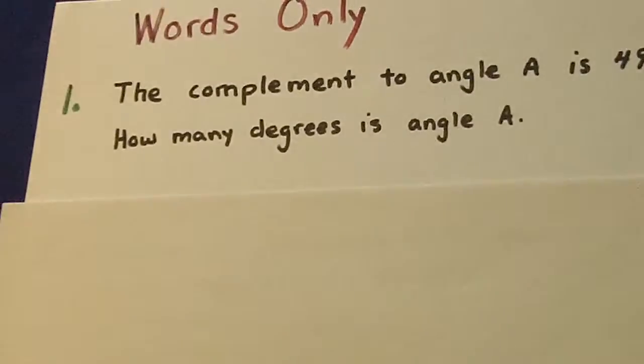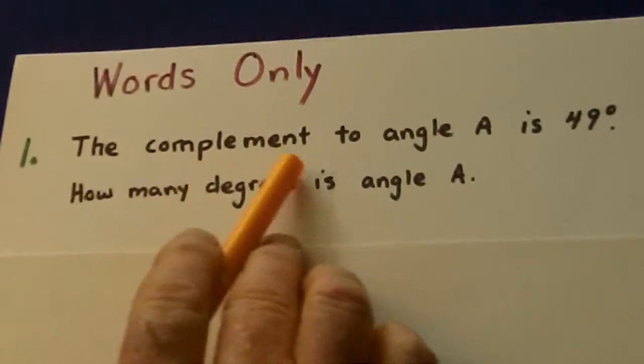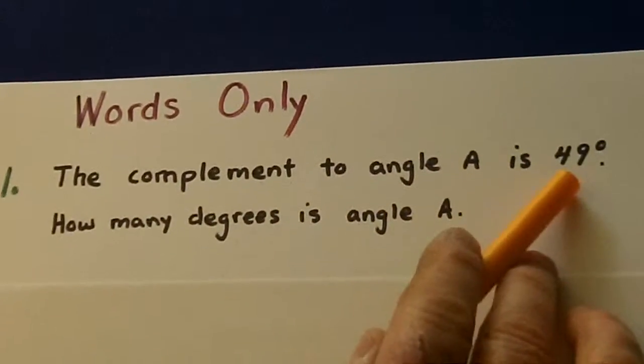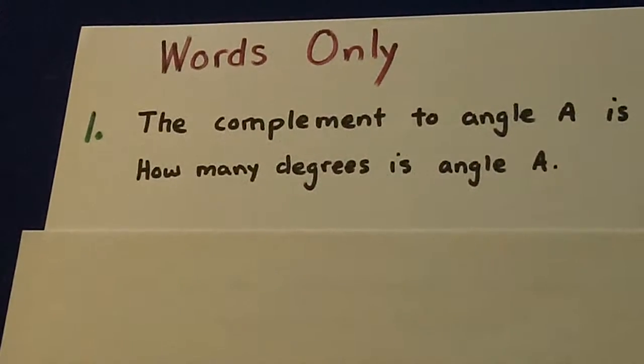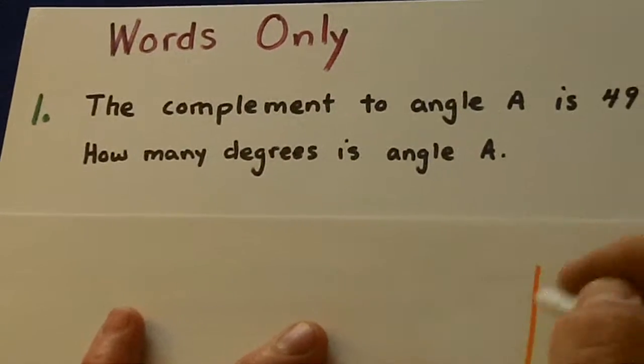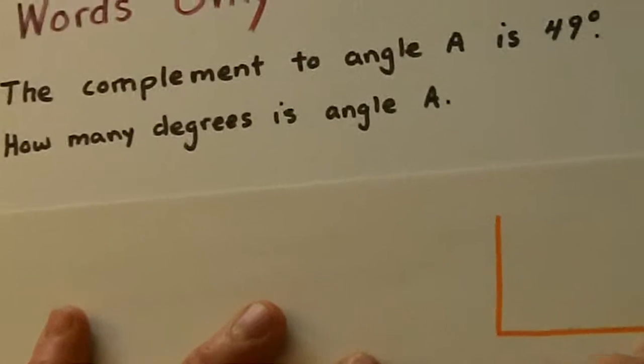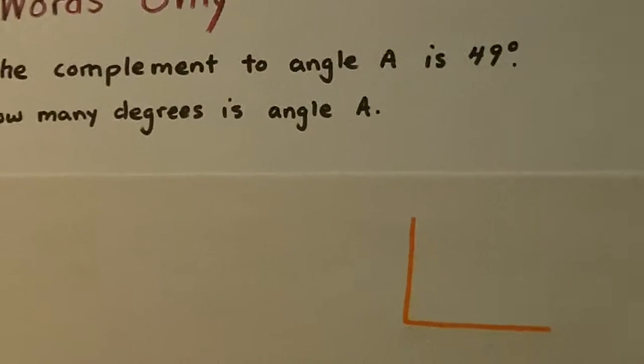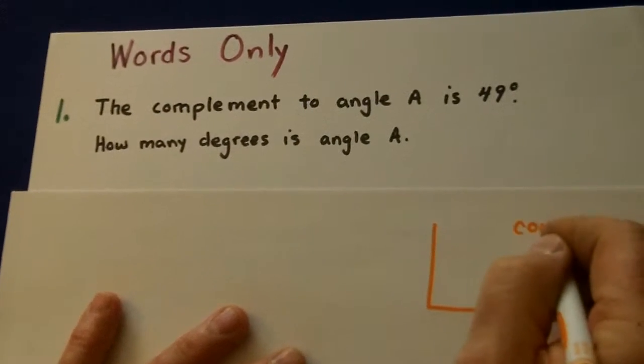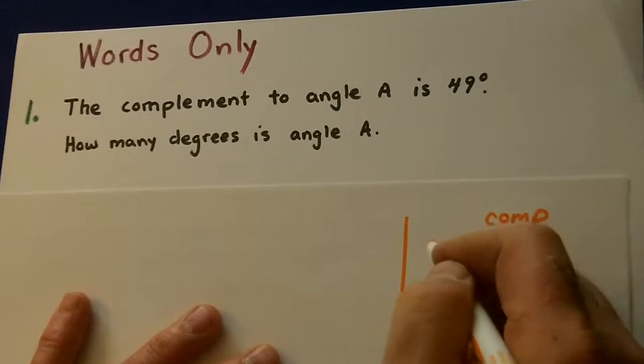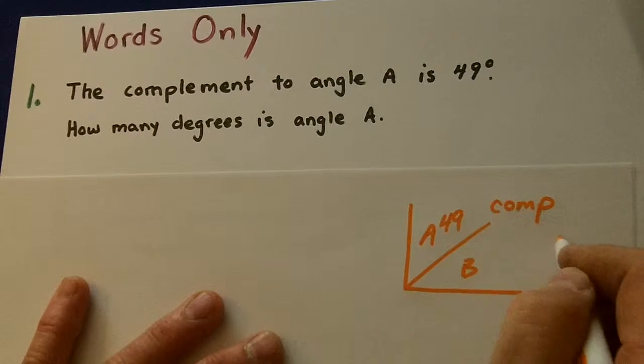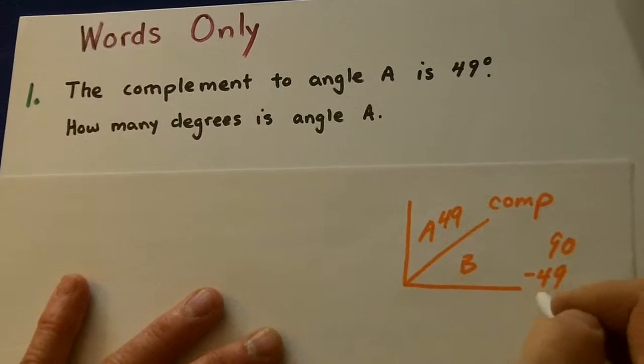So let's look at a words-only problem. Number one: the complement to angle A is 49. How many degrees is angle A? Now you see there's nothing like this, there is no 90 degrees. We have to know that complementary angles are 90. So let's say A is 49, what's B? Well, we just go 90 minus 49 and we get 41.